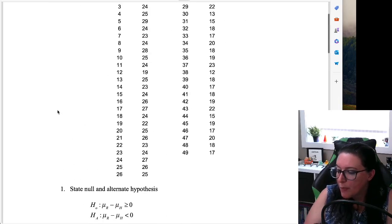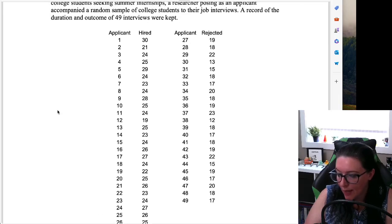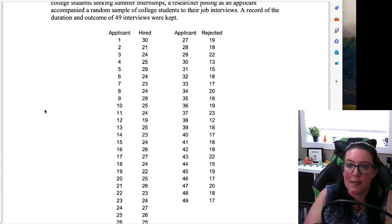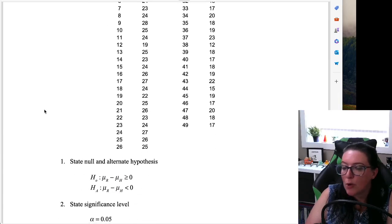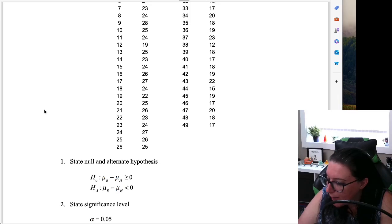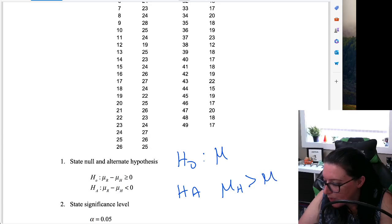In this particular example you see here, we have hired and rejected candidates. And the alternative hypothesis is that the interviewer spent more time with people who were ultimately hired. So we could write this here as the fact that the average time for hired is greater than the average time for those who were rejected.